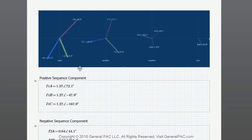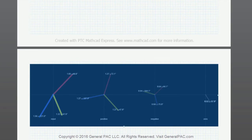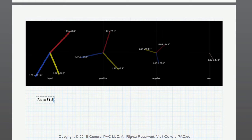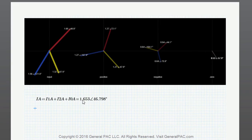Now let's go to the second page and start doing our mathematics. We know from the previous tutorial that the system phase A phasor is equal to the phase A positive sequence component plus phase A negative sequence component plus phase A zero sequence component. Let's see if that works out. And there you have it: 1.653 at 46.8 degrees, which confirms that adding positive, negative, and zero sequence components gives us the original phasor.